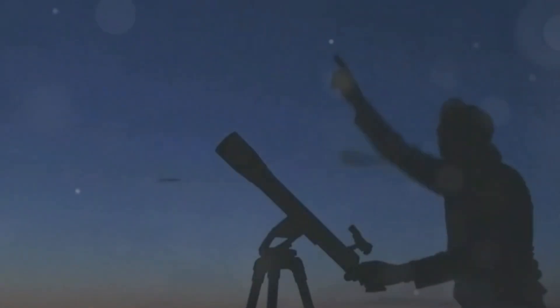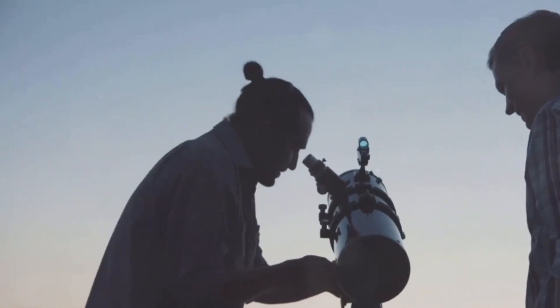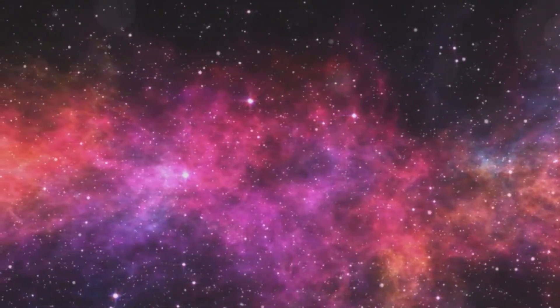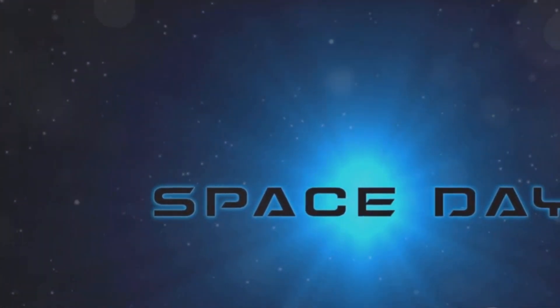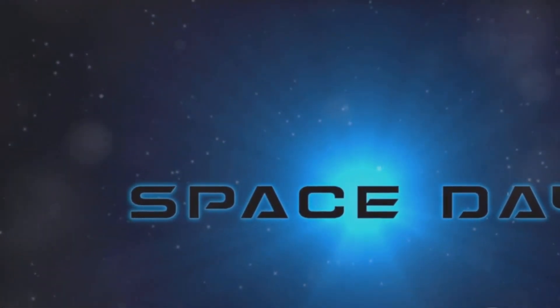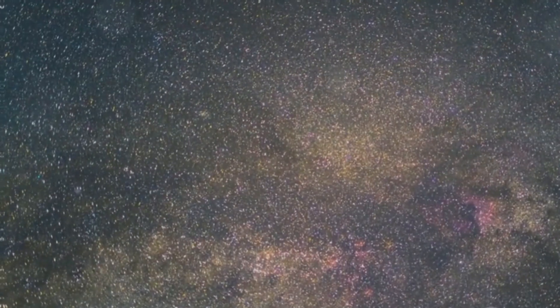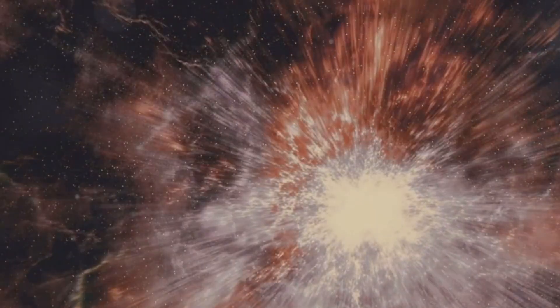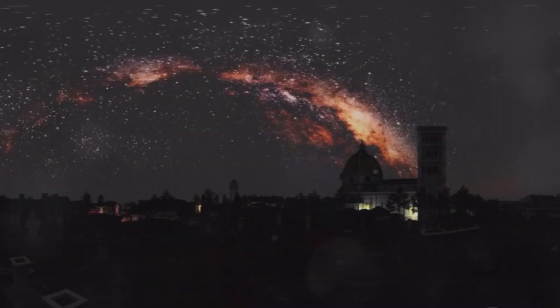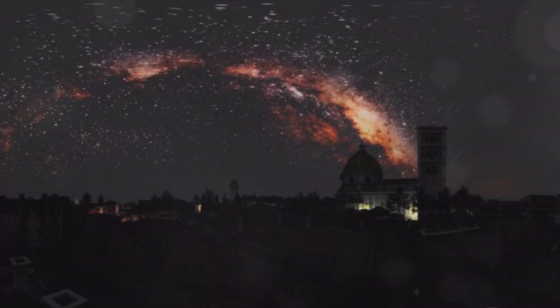They are using telescopes both on the ground and in space to study the star in detail. They are analyzing its light. They are measuring its brightness. They are mapping its surrounding nebula. The more we learn about CX-330, the more we realize how much more there is to discover. This star is a reminder that the universe is full of surprises. It is a vast and complex place. We are only just beginning to understand its secrets.